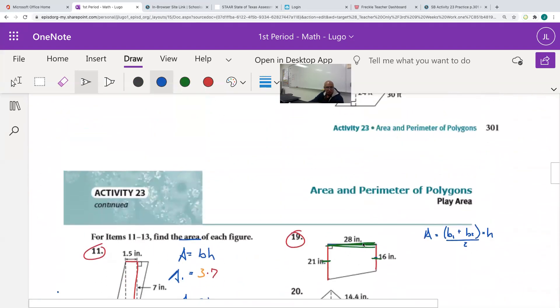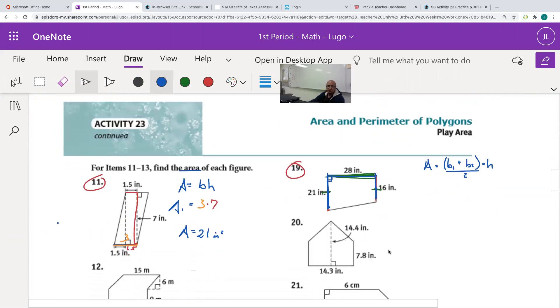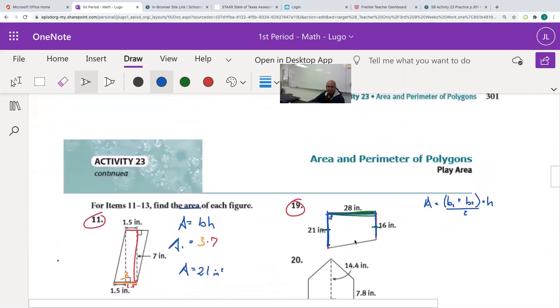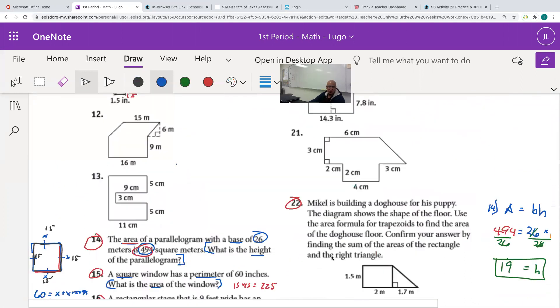Number 19, same thing, a trapezoid. But this time it's on this side. The bases are right here. 16 and 21 are the bases, because remember, the bases in a trapezoid are the parallel sides. So these sides are parallel. They'll never touch. So 16 plus 21 times the height, which is a straight perpendicular line. So that's 28 from the bases. So 16 plus 21 times 28 and then divide it by two. That'll give me the area for this trapezoid.